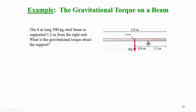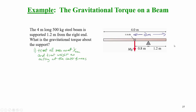To calculate the gravitational torque, we consider all 500 kilograms as being concentrated at the center of mass. So the force of gravity acting is 500 kilograms times 9.8 meters per second squared. The center of mass is 2 meters from either end of the rod, but what we need is the distance between the center of mass and the fulcrum — the pivot point. That distance is 0.8 meters. We treat the weight as acting at the center of mass.